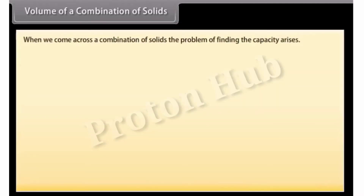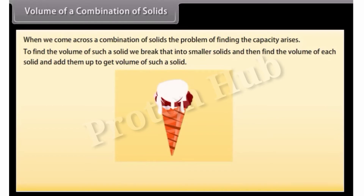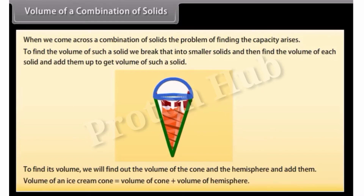When we come across a combination of solids, the problem of finding the capacity arises. To find the volume of such a solid, we break it into smaller solids, find the volume of each solid, and add them up. Look at this ice cream cone — it is a combination of a cone and a hemisphere. The volume of the ice cream cone equals the volume of the cone plus the volume of the hemisphere.